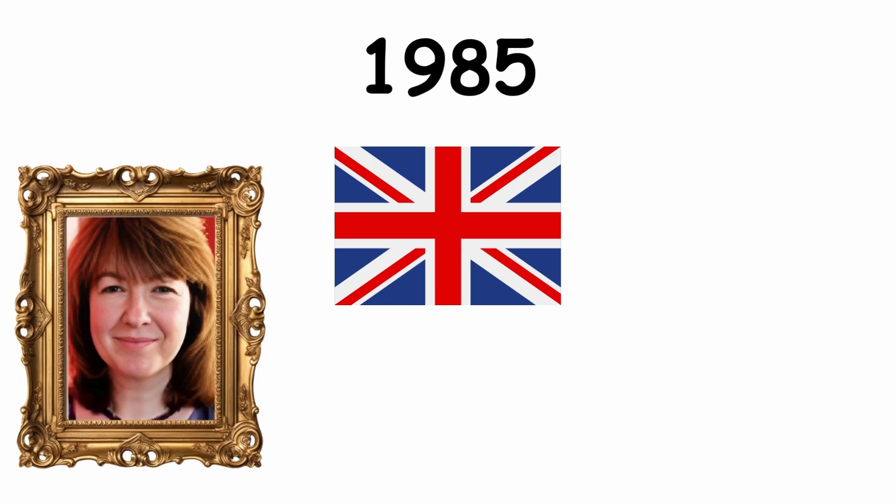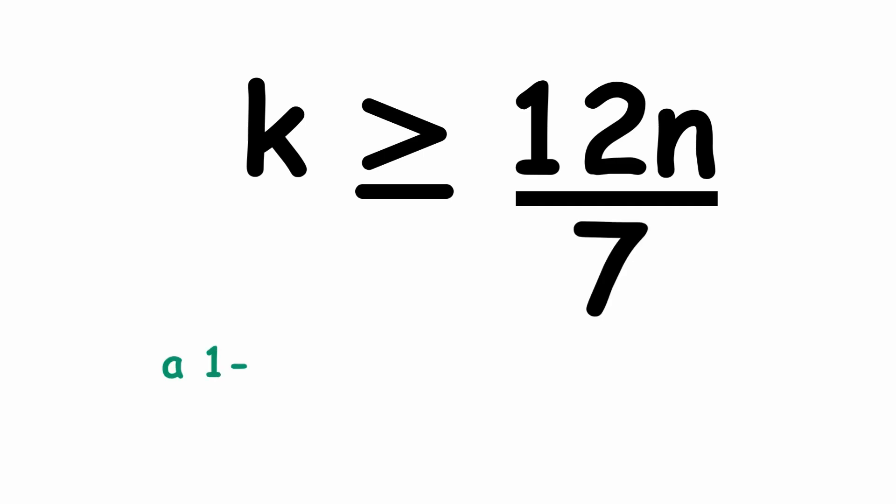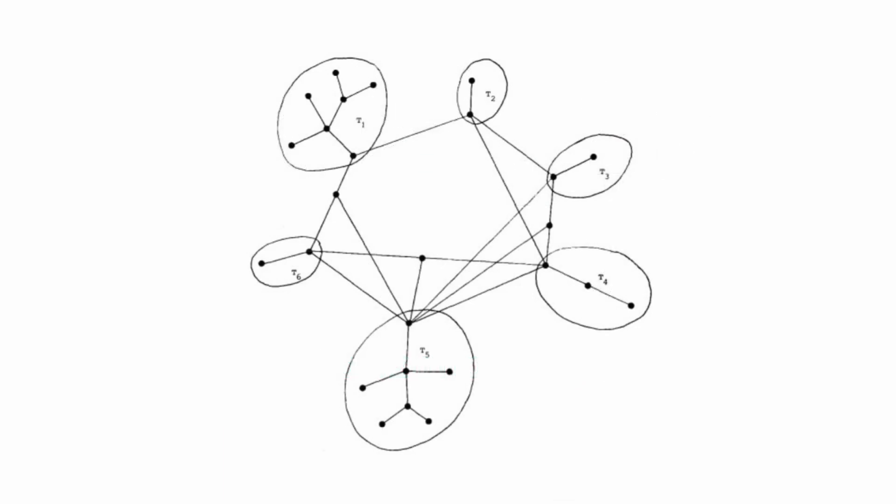A better result was obtained in a 1985 paper by British mathematicians Amanda Chetland and Anthony Hilton, showing that if k is greater than or equal to 12n divided by 7, a one-factorization is possible. This is the best result achieved to date.